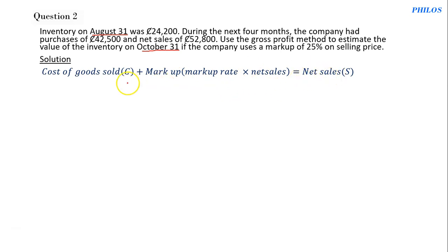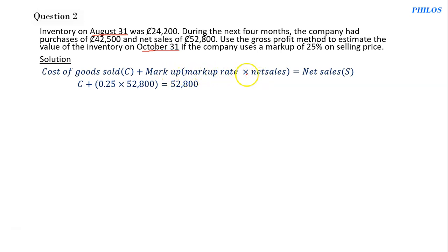The formula is: cost of goods sold plus markup equals net sales. The markup equals the markup rate times net sales. Since cost of goods sold equals C, we write: C plus (0.25 times 52,800) equals 52,800. The markup rate is 25 percent, that's 0.25, and net sales is 52,800.